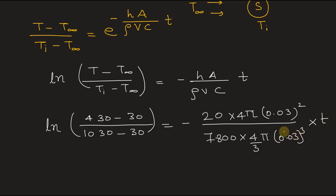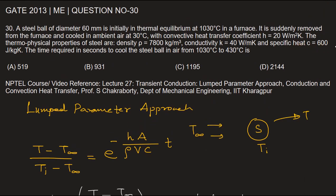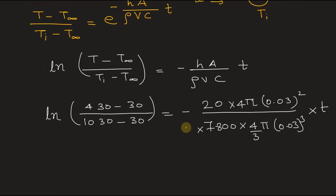And of course the value of C. We forgot to multiply the specific heat capacity, that is 600 joule per kilogram Kelvin. So 600.